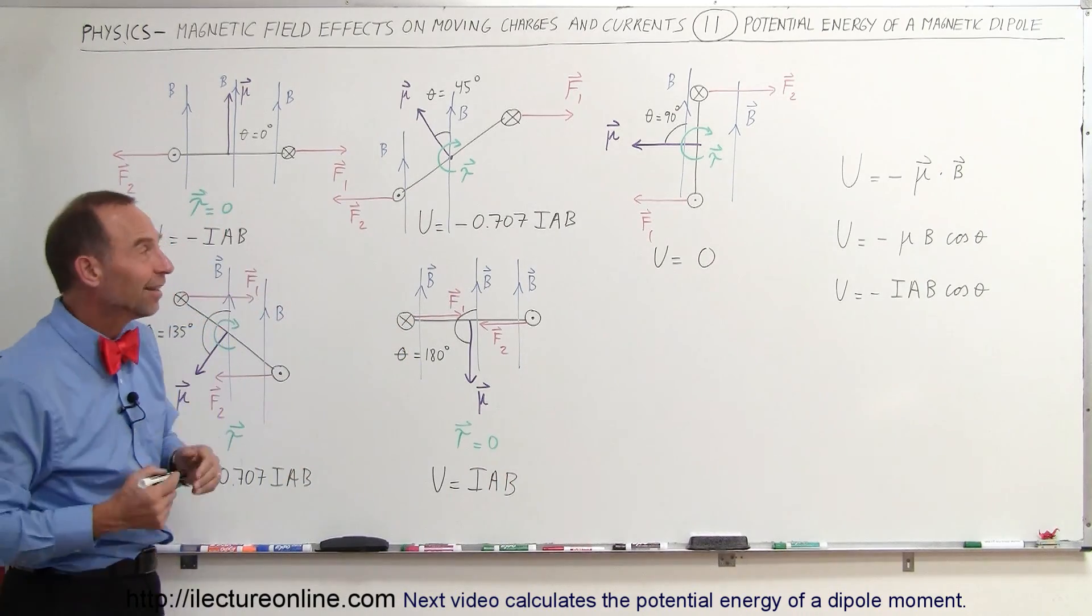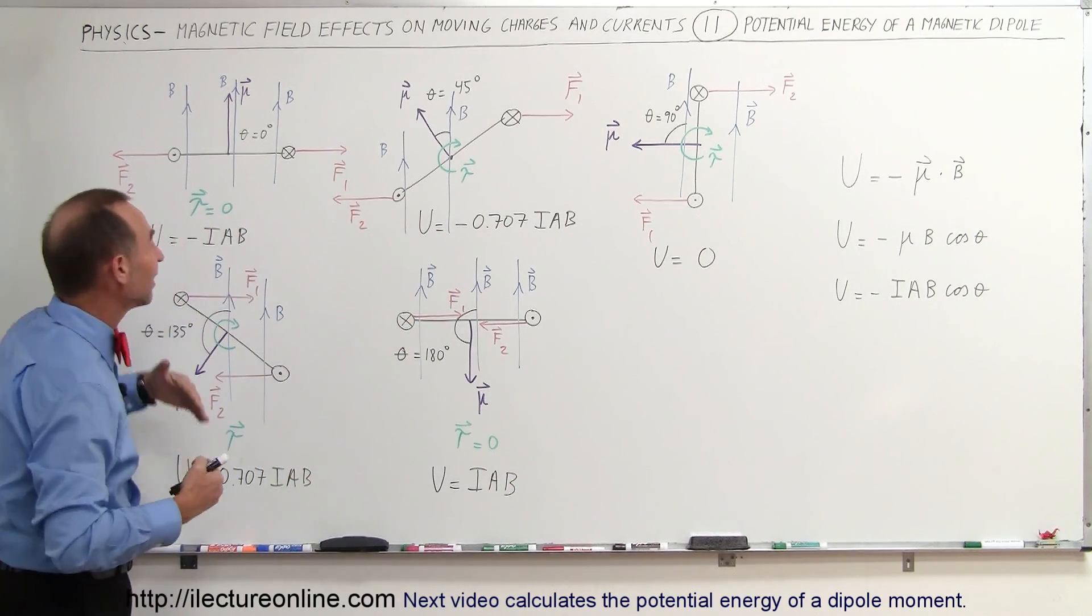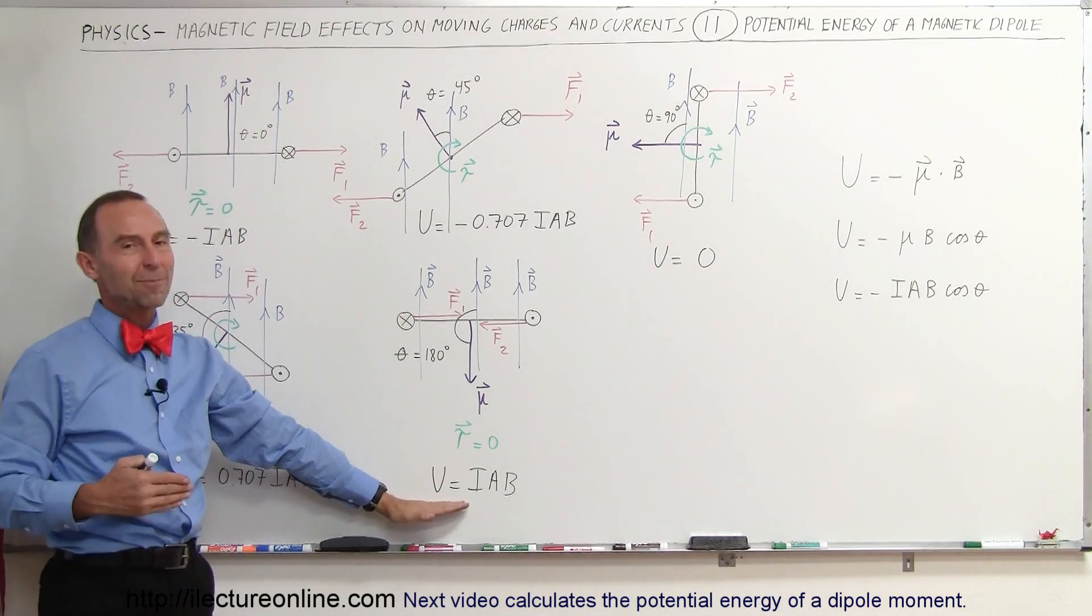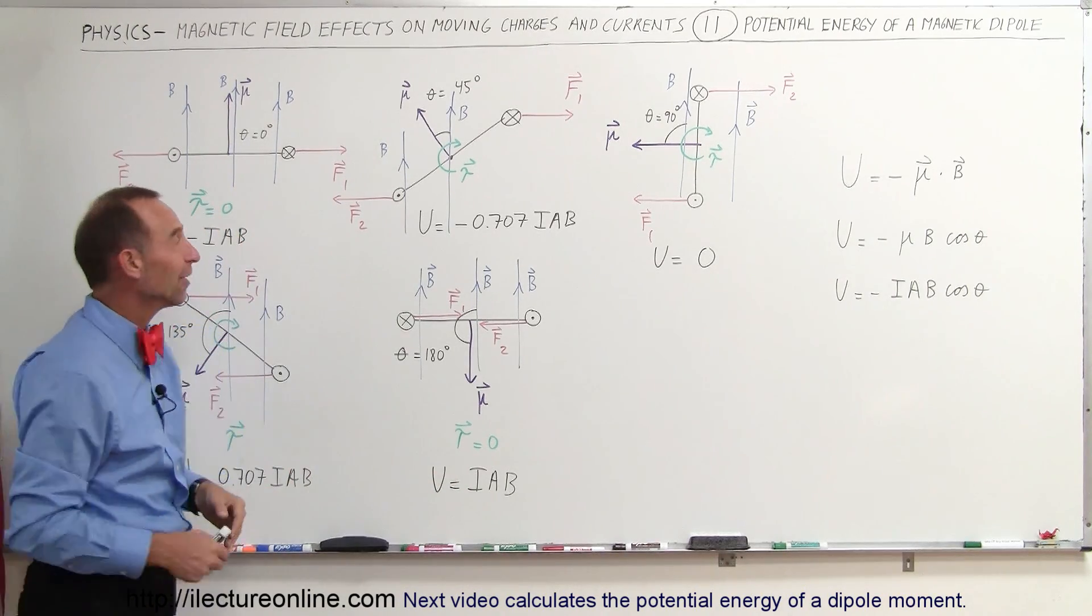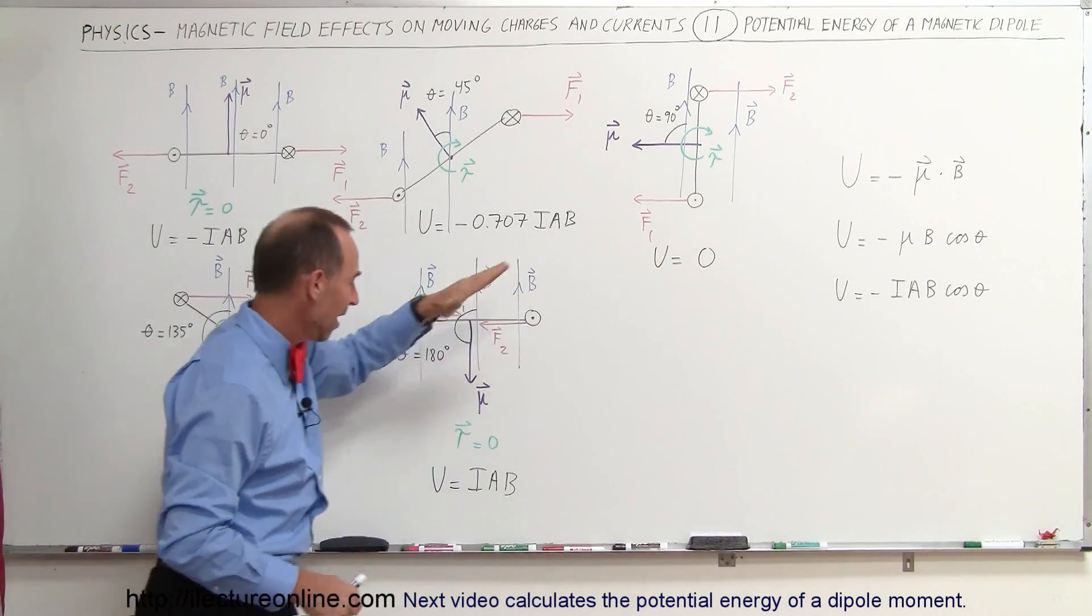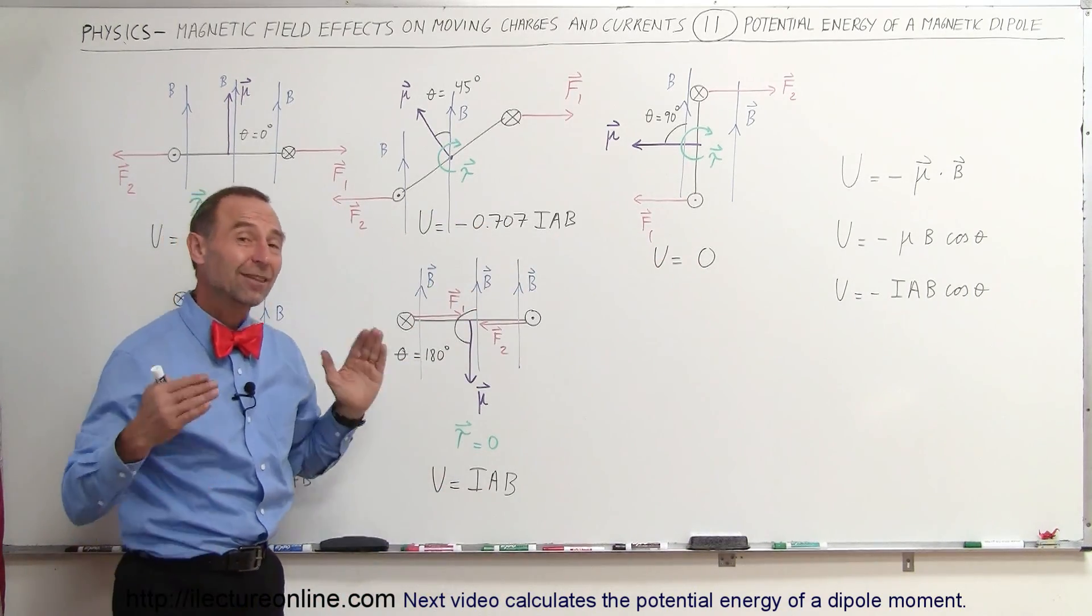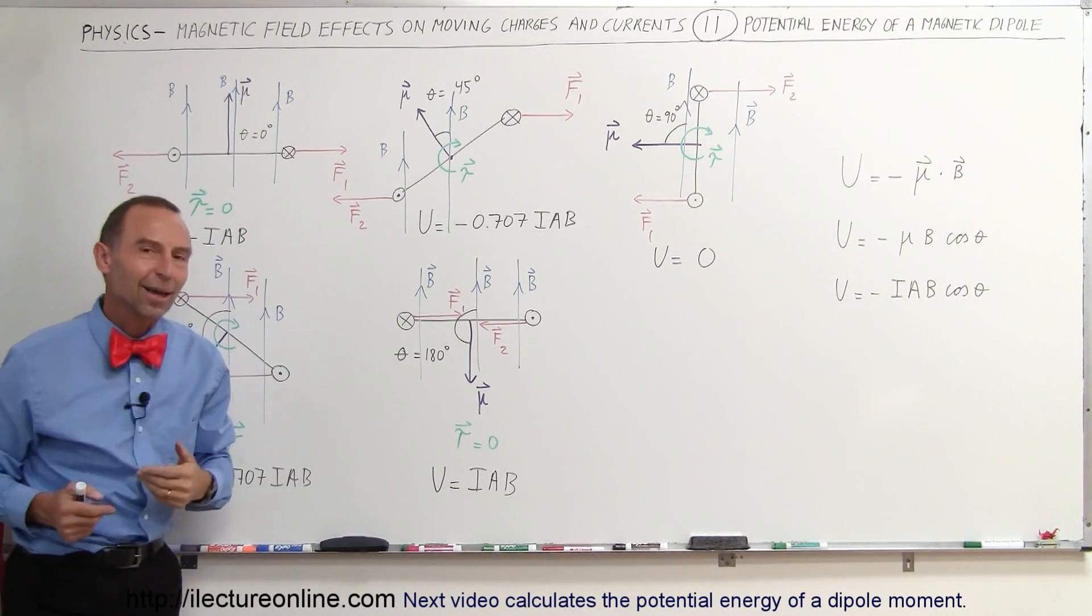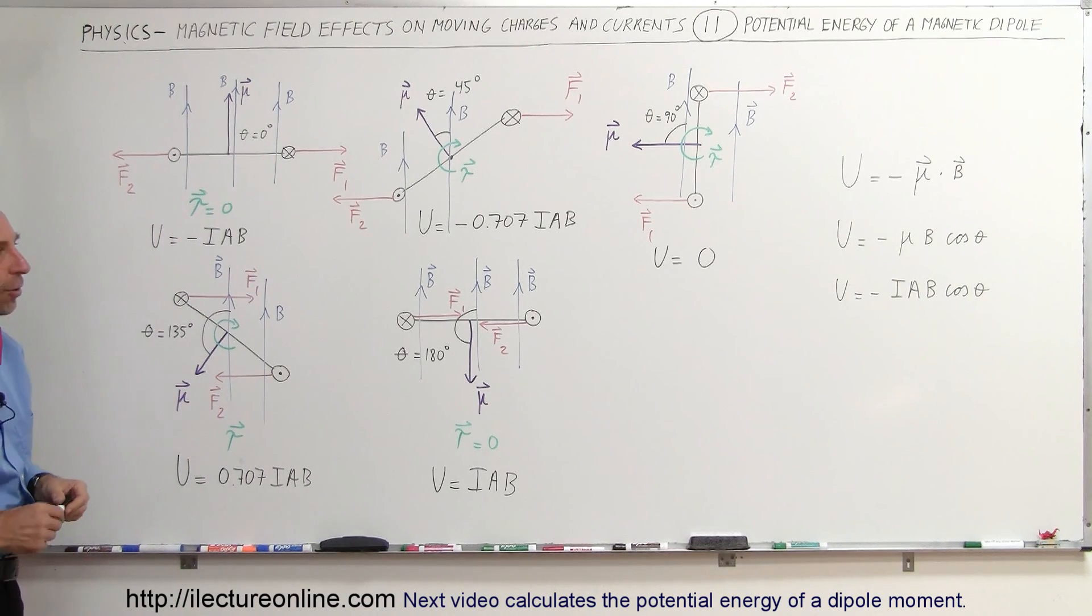So it's kind of interesting the way it's defined. If it was up to me, I would define the zero energy point here, and this would be twice IAB, but that's not the way they defined it. They defined this as negative IAB, zero at this point, and positive IAB, so that the difference in energy between this state and this state is indeed twice IAB. So it comes out to the same thing, it's just a different reference point.